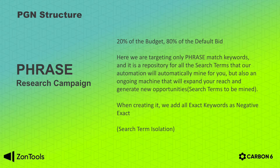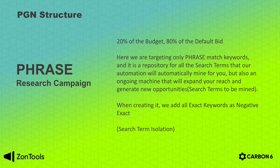The phrase campaign will be a research campaign and we will allocate 20% of the budget to it. Being a research campaign it is less likely to convert, so we will use 80% of your default bid. We will be targeting only phrase match keywords and it will be a repository for all the good terms that you will add. We will also test them as phrase match as well as for all the terms that our automation will mine for you. It's important to note that when we create a PGN we will negate all the keywords that you put in exact match away from the phrase campaign in order to avoid search term collision and leverage search term isolation.